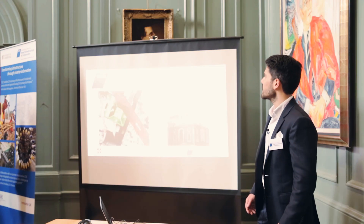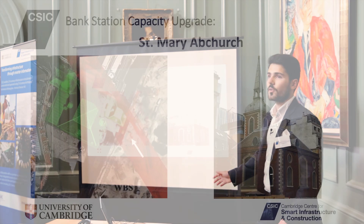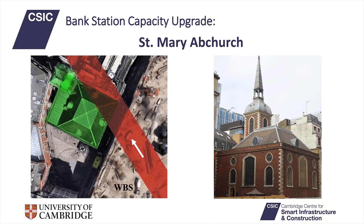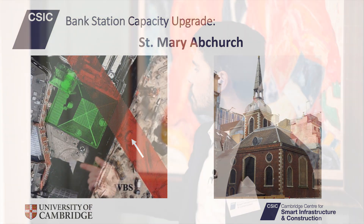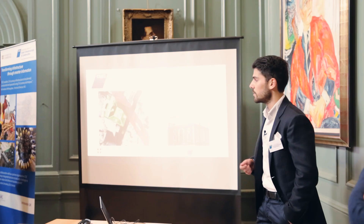Let's introduce our case study. London Underground Bank Station is being upgraded to relieve congestion and increase its capacity — a scheme known as the Bank Station Capacity Upgrade. The tunnel passes under the northeast corner of St Mary Abchurch, a medieval Grade I listed church that was rebuilt by Sir Christopher Wren after being damaged by the Great Fire of London.